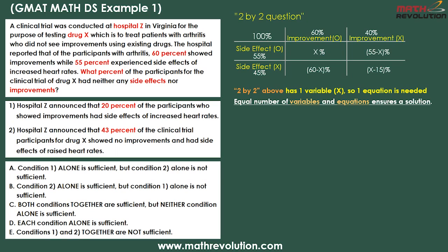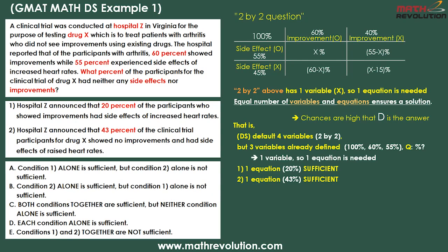This is because equal number of variables and equations ensures a solution in the DS section. So the above question will likely have D as the answer, because each statement alone is sufficient. A 2 by 2, by default, has four variables. But in this question, three variables are already defined as 100, 60, and 55 percent, because the question is asking about percentages. That is why we only have one variable and require one equation to solve this problem.